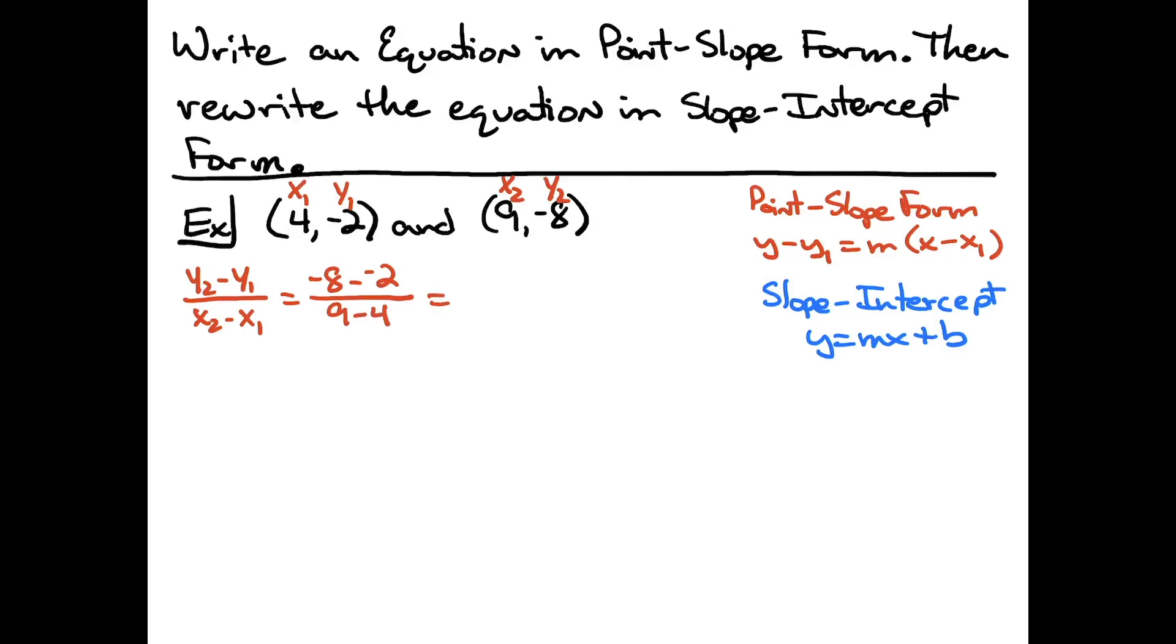Simplifying there, that negative 8 minus a negative 2 is going to be a negative 6. 9 minus 4 on the bottom is going to be a 5. So I have my slope.